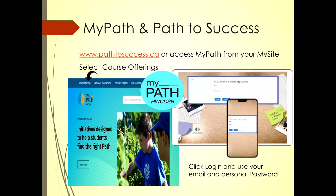Where do you find the information on your grade 11 courses? Most of us have had conversations in the past year about accessing your MyPath account. Everyone knows at this point how to do it — whether you log in through my site or select course offerings through the pathtosuccess.ca website. When you get to the front page of the Path to Success site, select course offerings, and then you'll be able to select from the actual schools. For all of us, that's St. Thomas More Catholic Secondary School.